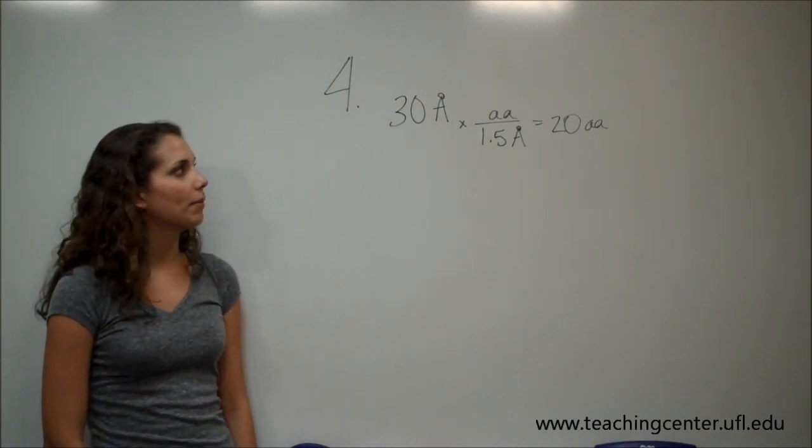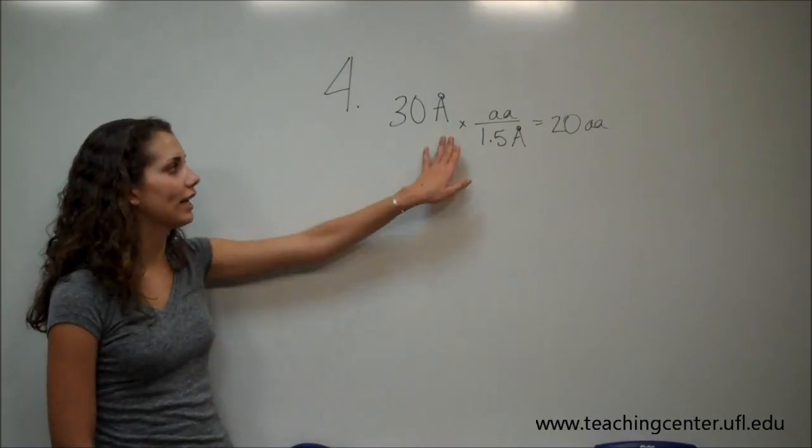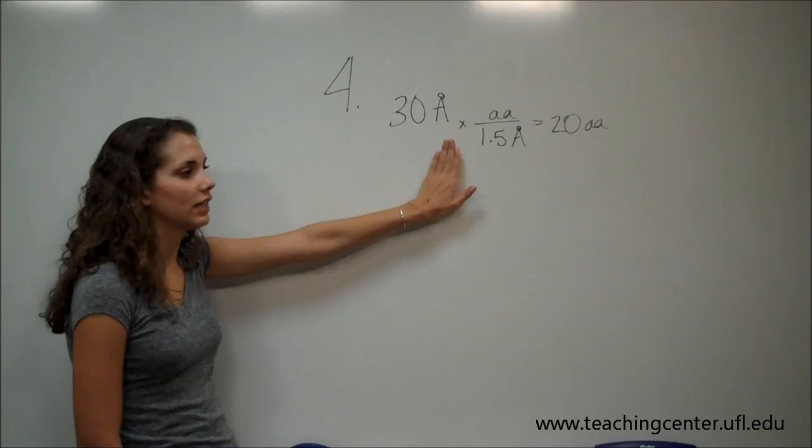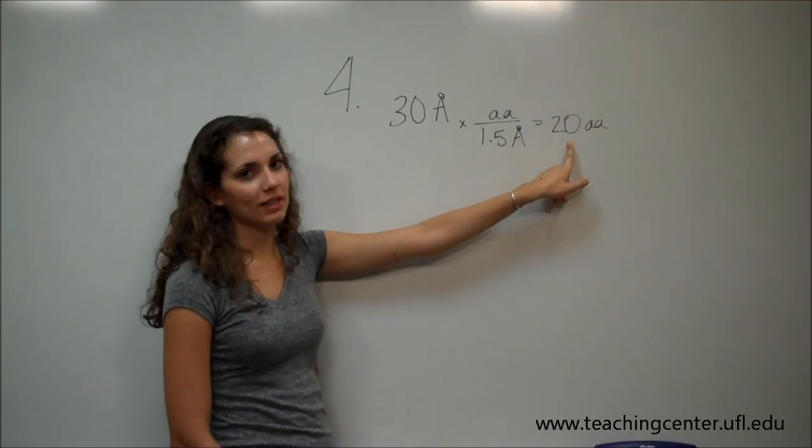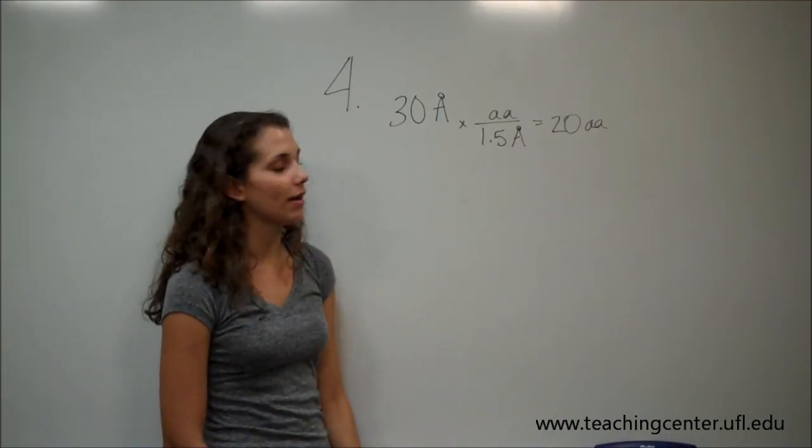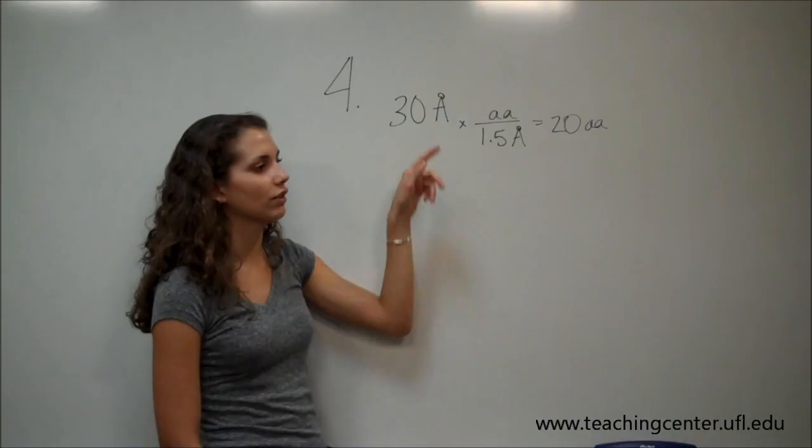So the standard thickness of the membrane is 30 angstroms. Remember, we solved in the last part of problem three, we found that 20 amino acids were required to cross a membrane with a thickness of 30 angstroms.